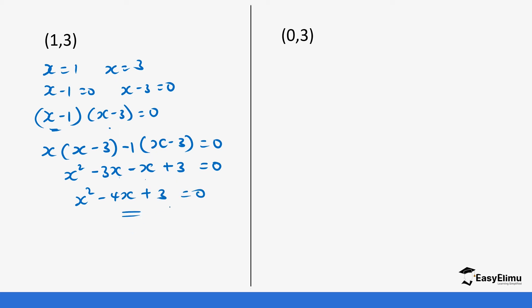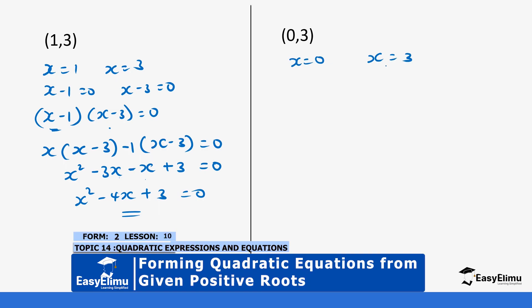Finally, this is our last question: x equals 0 and x equals 3. The x equals 0 is going to remain as 0.